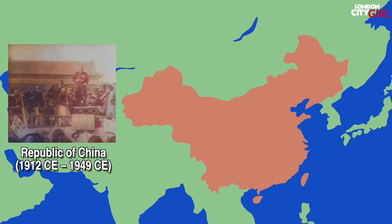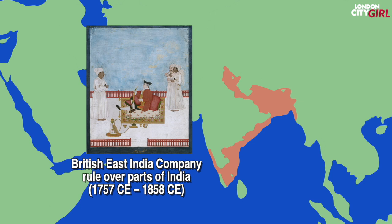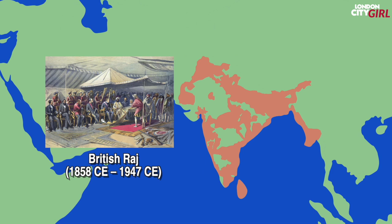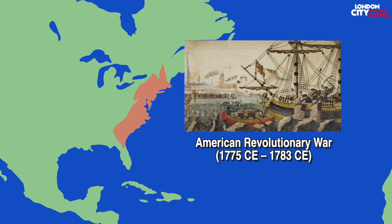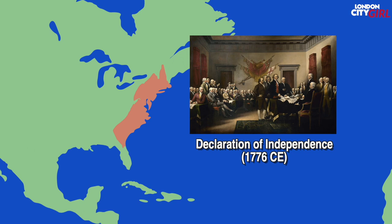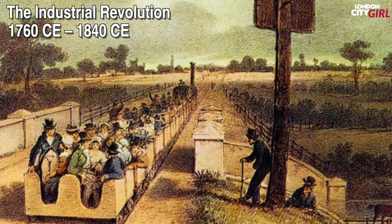Between 1757 CE to 1858 CE the British East India Company took over large parts of India as the Mughal Empire declined. Later the British crown assumed direct control of the Indian subcontinent in the form of the new British Raj. 1775 CE saw the American Revolution as the 13 British colonies revolted against British rule. The colonies declared independence in 1776 CE which began the formation of the United States of America. The industrial revolution occurred from 1760 CE to about 1840 CE and this was a major turning point in human history as machines replaced man's muscle power.